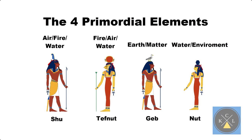Now we still have some more to go. The Ennead is one small aspect of the ancient Kemetic science that is connected to the Biblical Gospels. The Bible is a fringe aspect of this ancient spiritual science.